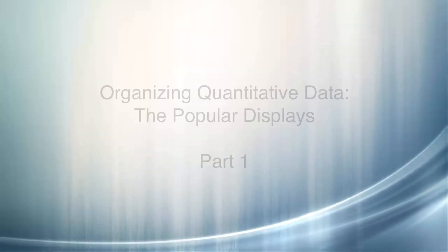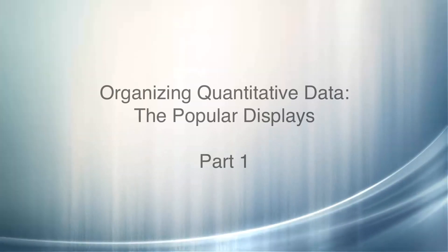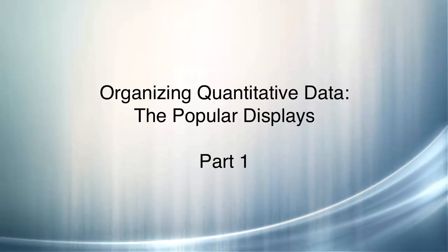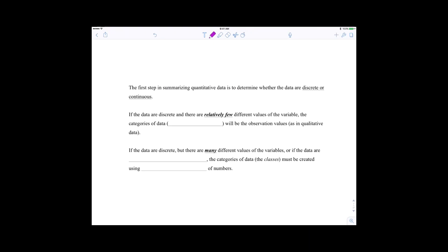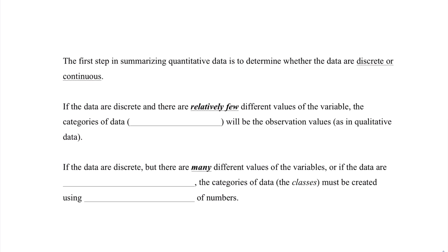Hey everyone, welcome back, and thank you for joining us again in our next discussion of statistics. The first step in summarizing quantitative data is to determine whether the data are discrete or continuous, as per our conversation in previous sections in case you forgot the difference between discrete and continuous data.